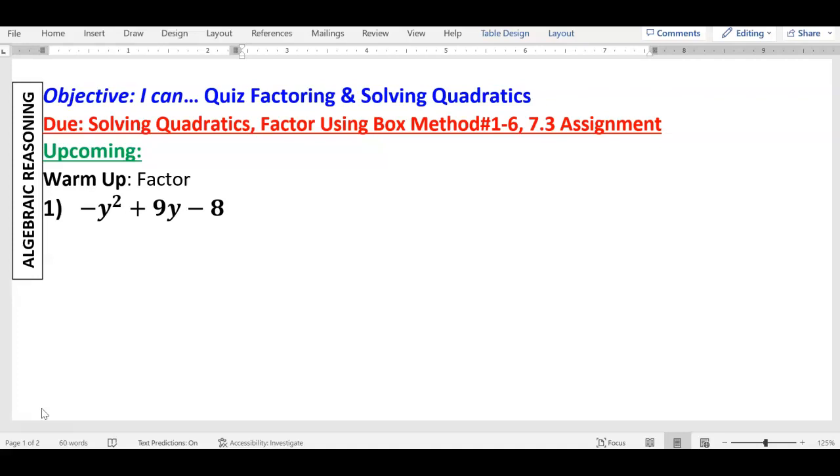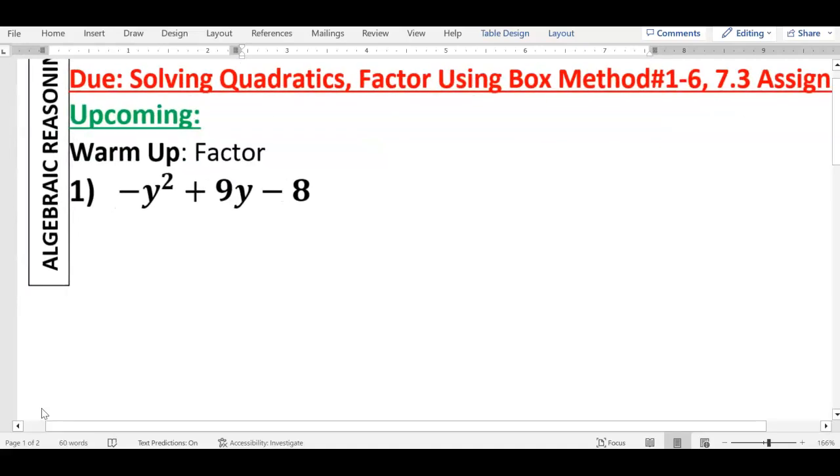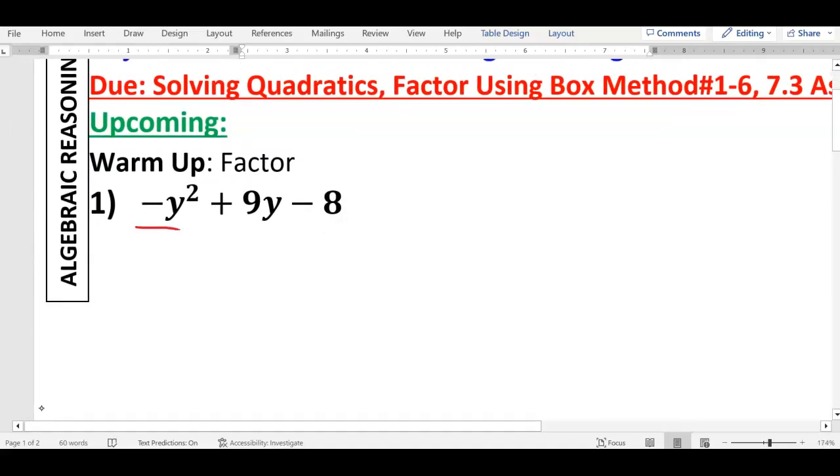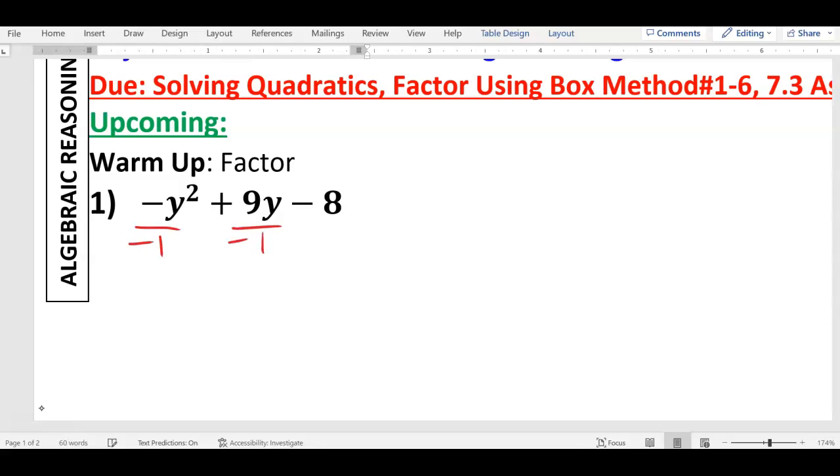So what we're going to do is factor out the negative by factoring out negative 1. So let's do that. I'm going to take every term and divide by negative 1. So basically, I'm going to have a negative 1 on the outside, and then whatever's left goes on the inside.